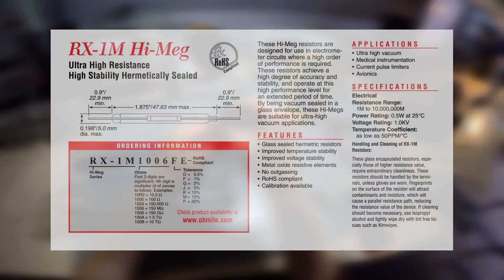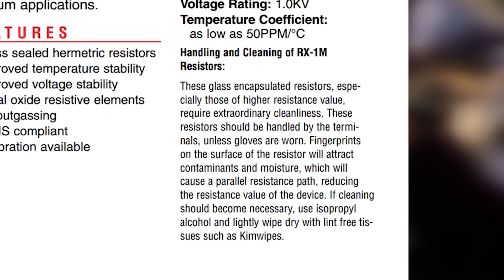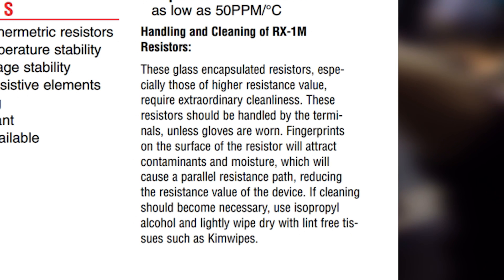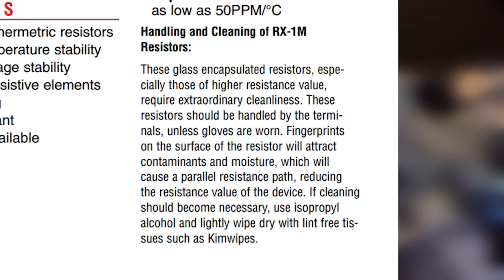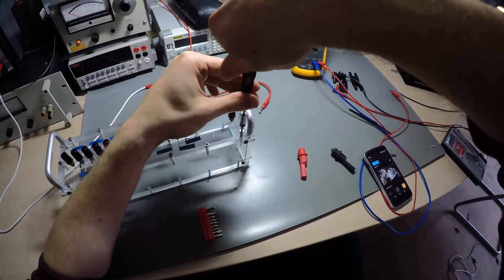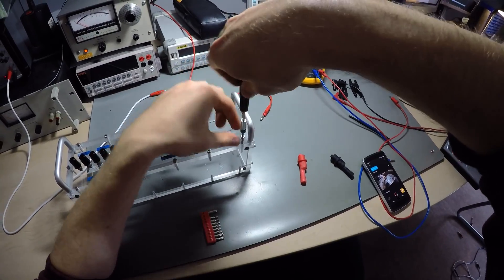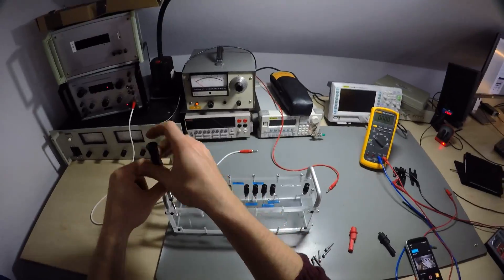The next best idea is based on this subtle paragraph in the data sheet of the resistor. It says that these resistors require extraordinary cleanliness and that if cleaning should be necessary, isopropanol alcohol should be used. Thing is, there are a lot of contaminants out there which will happily stick to the surface of the resistor. And most of them will influence its resistance. So let's go ahead and take care of that. And don't forget to smell everything thoroughly.